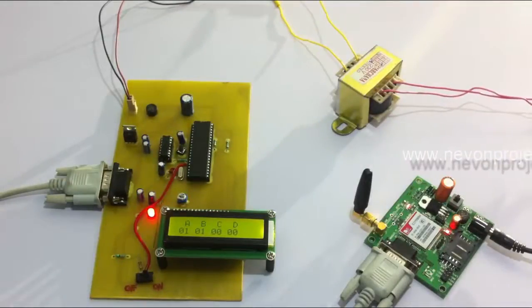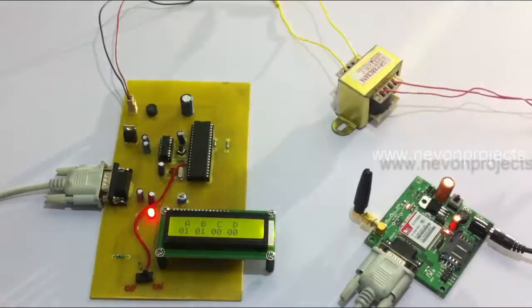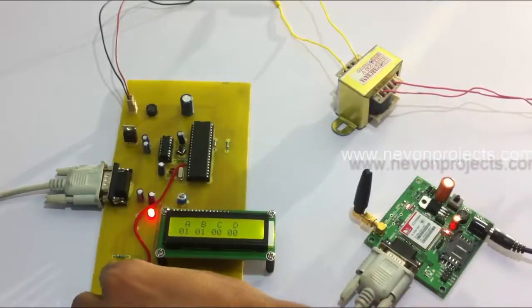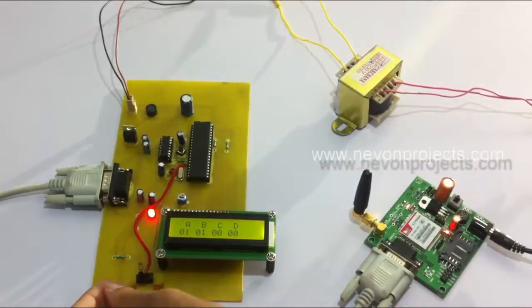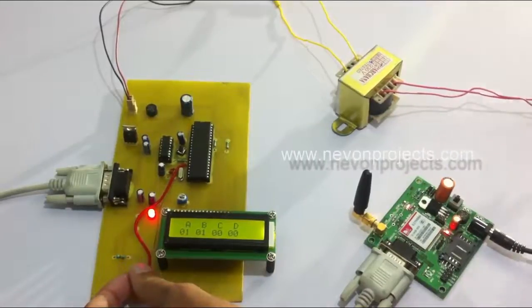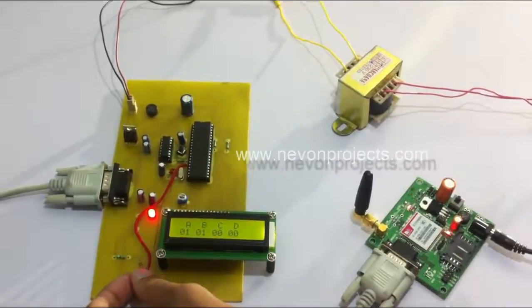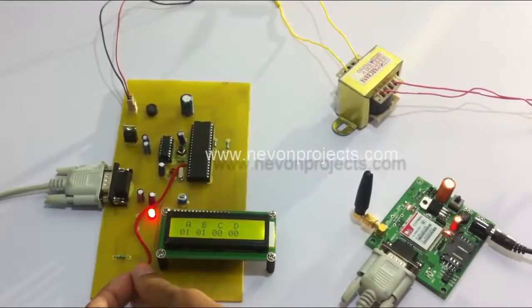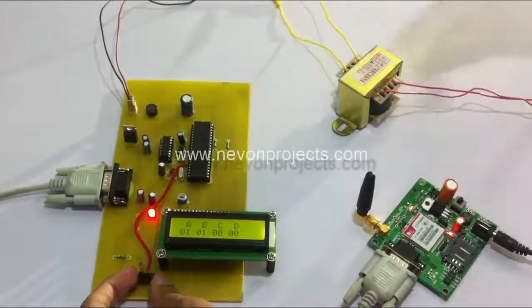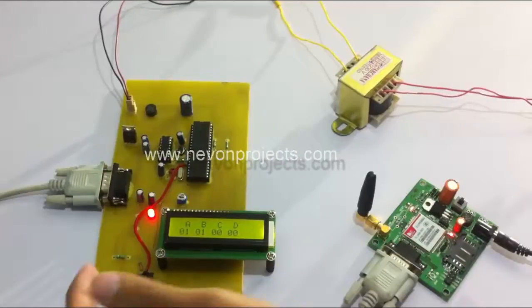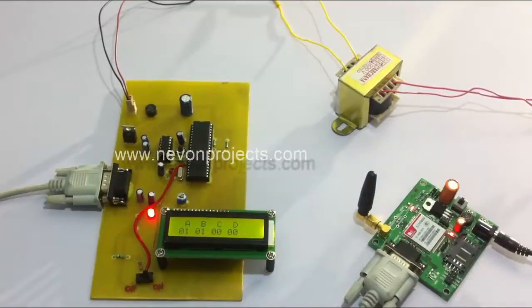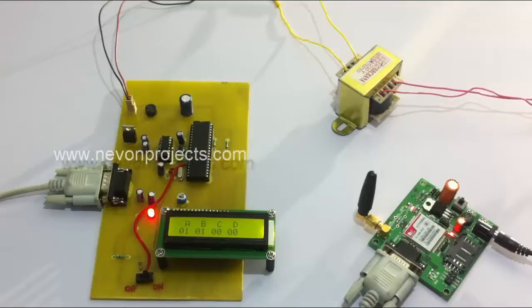And one more important feature here is that the admin can turn off the voting as and when needed. When the voting is off, no SMS is received and the voting system doesn't work. It just displays the results. When it is on, the system is open to receive SMS's and the voting system is carried on.